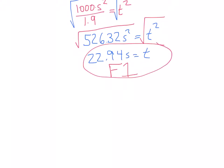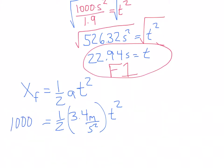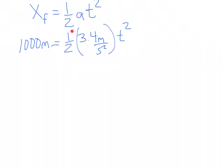Now let's do the same thing for the NASCAR. Remember we were left with x final is equal to 0.5 a t squared. And if we remember right, it was 0.5 and then we had 3.4 meters per second squared times t squared. And the distance was the same, 1,000 meters.